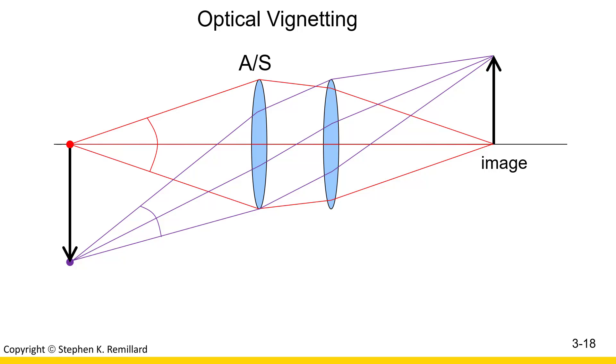So that's all you're left with from the tip of the object — less light, fewer photons. You can expect then that you're going to have dimming of the image out at the tip.